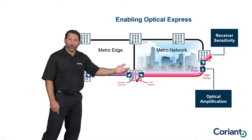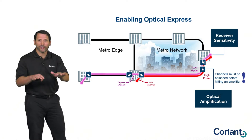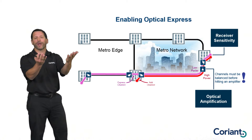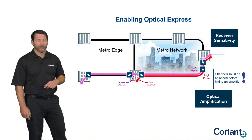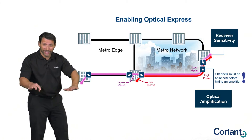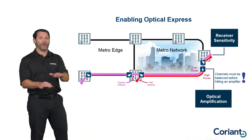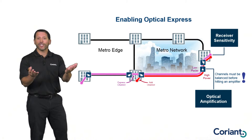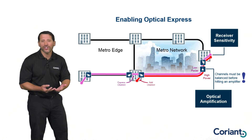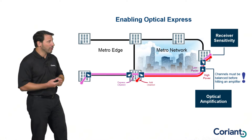As signals hit an amplifier, it's very important that before they arrive, the channels are balanced as accurately as possible — all at close to the same power level. That way, the amplifier can raise all of those signals back up to a point where the receiver can detect them. A good analogy: if you think of a crowded room with people all talking at the same level, you can amplify that signal to pick up all the individual conversations. But if one person comes in talking really loud and drowning out everyone else, even amplification won't help — they'll continue to drown out everybody else.